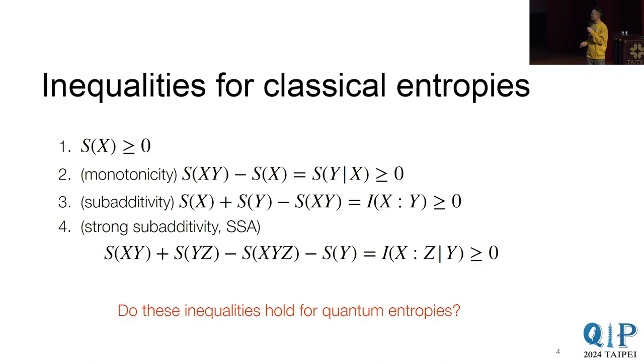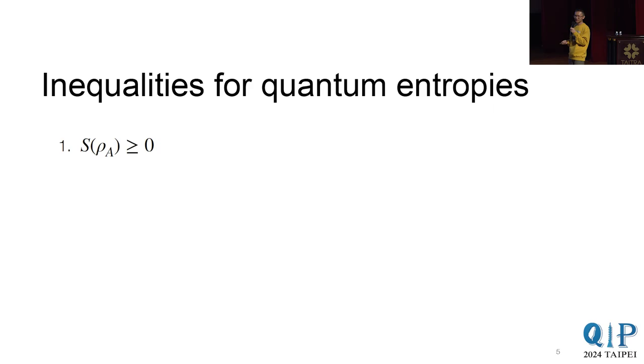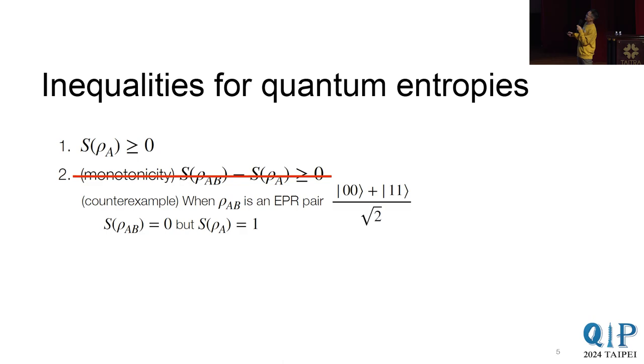And the natural question is, does these inequalities also hold for quantum entropies? And let's go through them one by one. So again, the entropy is positive. But unfortunately, the second inequality is no longer true. So it's because for quantum, you have these entanglements. So actually, the more system, it could lead to less entropy. So an extreme example is these EPR pairs. So as a whole, it's a pure state. So it has entropy zero. But as a subsystem, it has entropy one. So it violates the inequality.